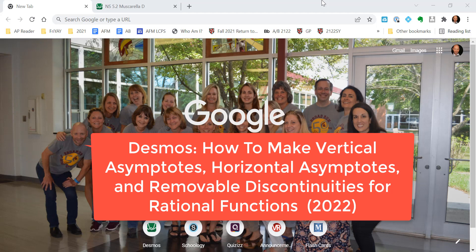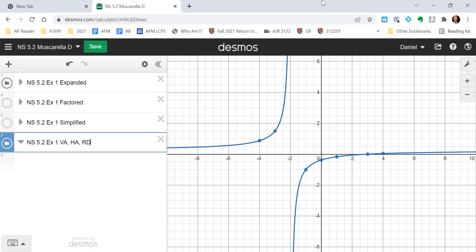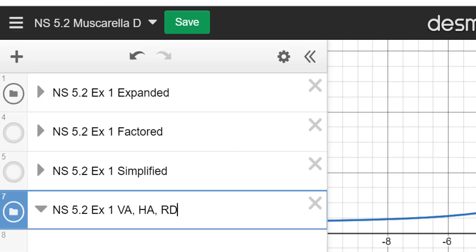So let's go ahead and make sure we have Desmos opened up in another tab. Now here you can see I've got four folders. And the first three folders, notice how the triangles are pointed. They're pointed at the words or the phrase NS 5.2, example one, blah, blah, blah.